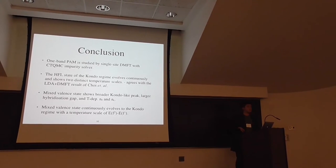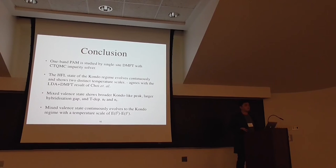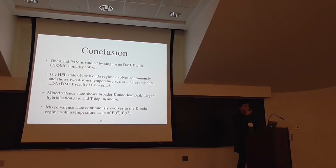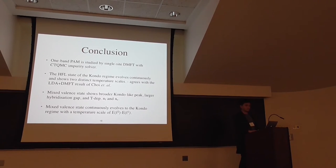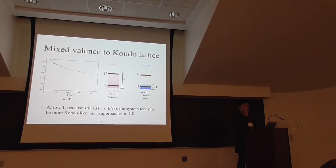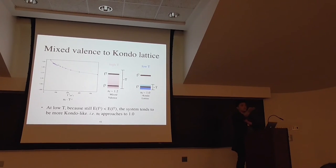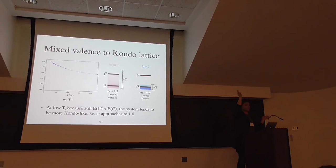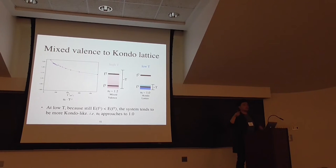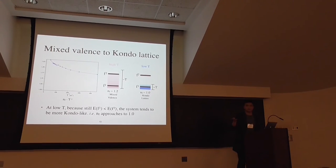We have five minutes for questions. [Questioner]: It's very interesting. Is there a pedagogical way to understand the evolution from the mixed valence state to the Kondo state just by changing the temperature? [Speaker]: If your temperature is sufficiently high, the occupancy of the F1 and F2 states has some kind of balance, so it is the mixed valence state. But if you lower the temperature, because the F2 state is at a higher level than F1, the system is occupied only by the F1 configuration — that means the Kondo regime.